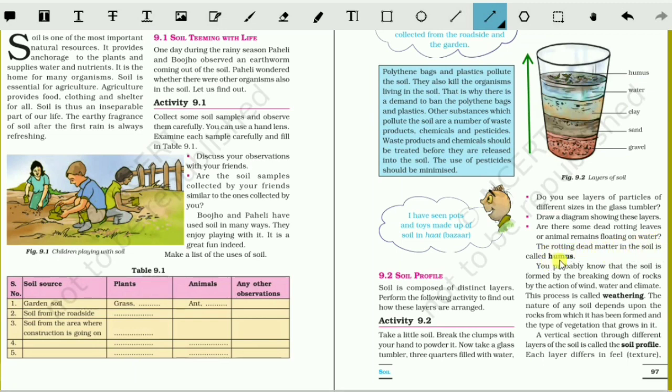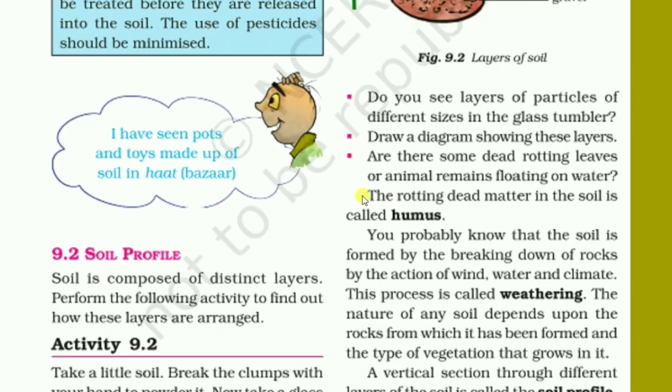The rotting dead matter in the soil is called humus. So it is very important—what is humus? Humus is the rotting dead matter. It contains the plant parts as well as the animal parts, and it will be very helpful for the fertility of the soil. Humus are different colors but it is very fertile.